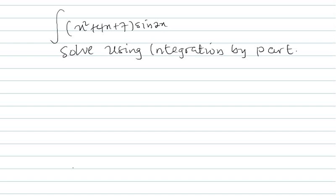Hello guys, welcome back to Khalil Tronics. In today's video we have another set of questions to solve using integration by parts. The question is: find the integral of (x² + x + 7) multiplied by sin(2x). This is integration by parts — one function multiplied by another — where we have a transcendental function and a component that has x.